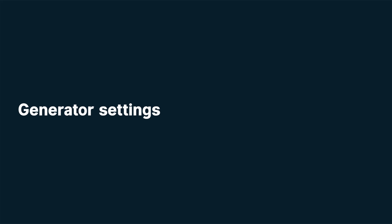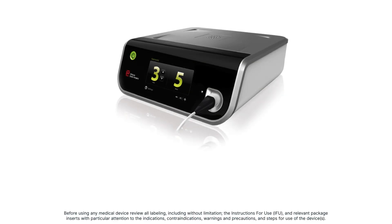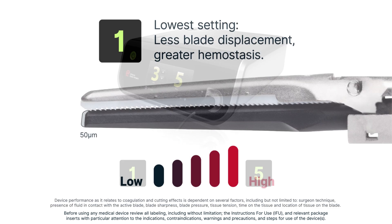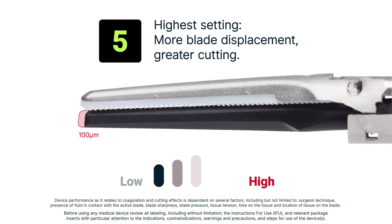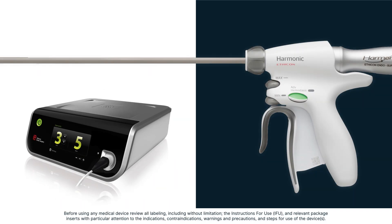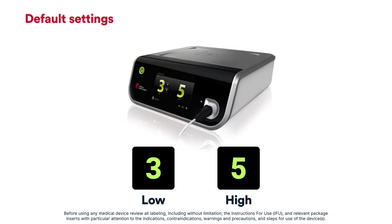Generator settings. Generator output is controlled by the power setting and ranges from 1 as the lowest energy output to 5 at the highest. At power setting 1, the blade will displace approximately 50 micrometers, resulting in greater hemostasis. Power setting 5 causes the blade to displace in the range of 100 micrometers, resulting in a greater cutting effect. Most generators have min and max buttons for easy use, with default settings of min at 3 and max at 5.